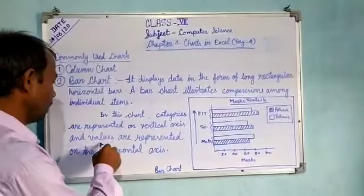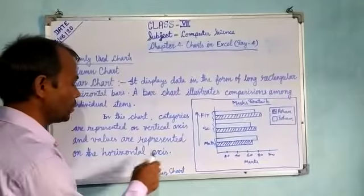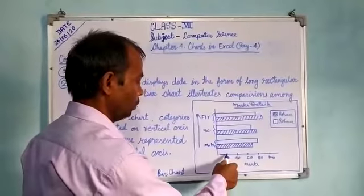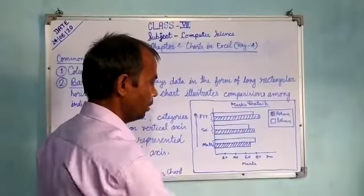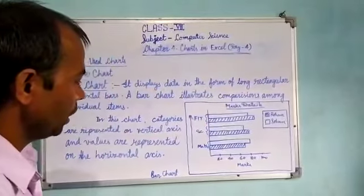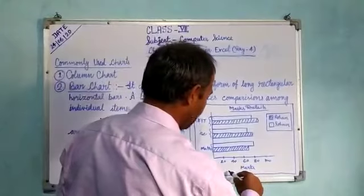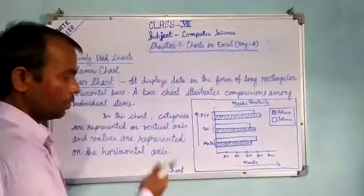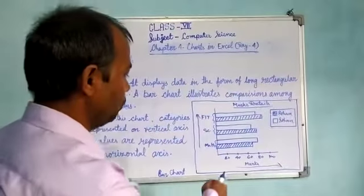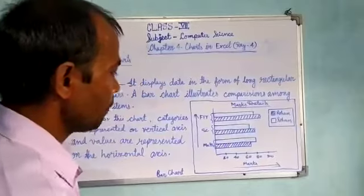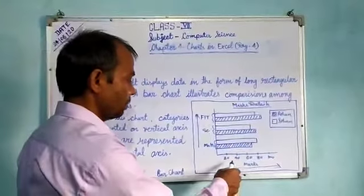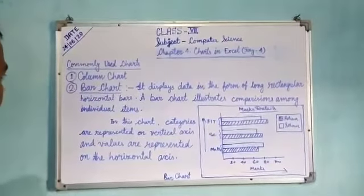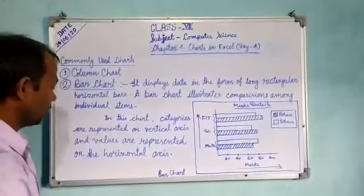Values are represented on the horizontal axis — the x-axis. Here the marks, that is the values — 20%, 40%, 60%, 80%, 100% — are represented on the horizontal base. In column charts the values axis is the y-axis, but in bar charts these values are represented on the horizontal base, the x-axis. This is the basic difference between the column chart and bar charts.